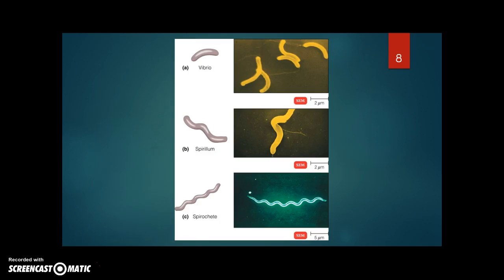Finally, spiral-shaped bacteria includes Vibrio, comma-shaped, Spirilla, corkscrew-like spiral shape, and Spirochaetes, long, thin and flexible corkscrew shaped bacteria.